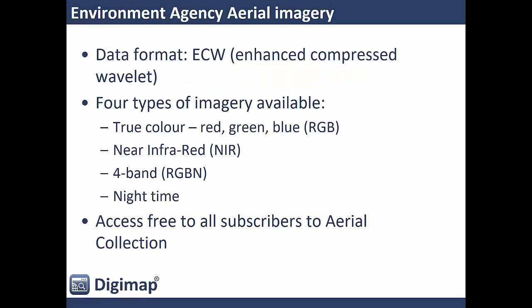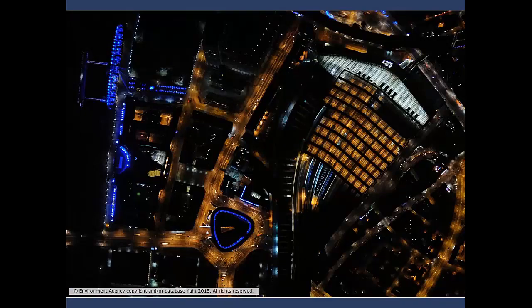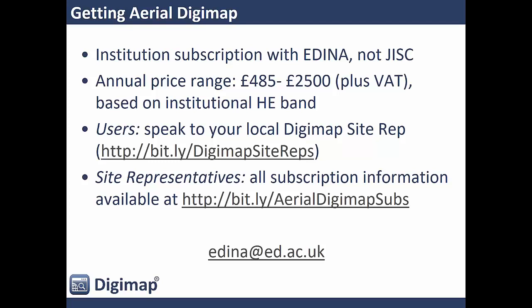There is some aerial imagery available in the LiDAR collection as well — this came from the Environment Agency, so it's only available for England, captured at the same time as the LiDAR scanning. It all comes in ECW format, which most image processing packages can read. There are four different types: true colour, near infrared, four-band, and night-time. Access to all this data is free for anybody that subscribes to the aerial collection. Here's a night-time image of London Waterloo station with the London Eye nicely lit up — night-time images are really interesting and useful for studies around light pollution and urban areas.